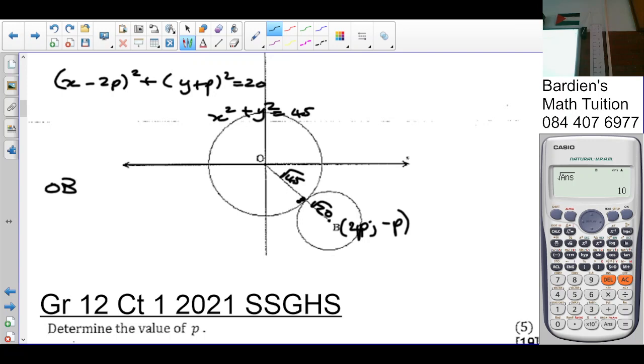So we know that OB squared is equal to the square root of, I'm going to go with the distance formula. The coordinates of the origin is 0 and 0, so it's 2p minus 0 squared plus minus p minus 0 squared. So that's simply going to give us the square root of 5p squared. So 2p all squared is 4p squared plus p squared, which gives you 5p squared.